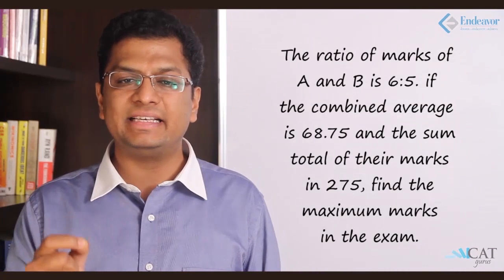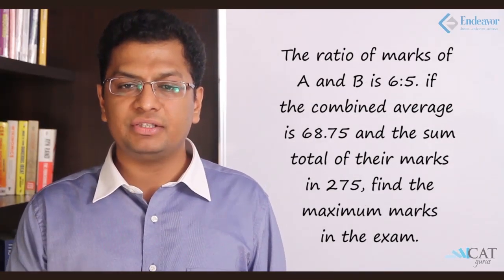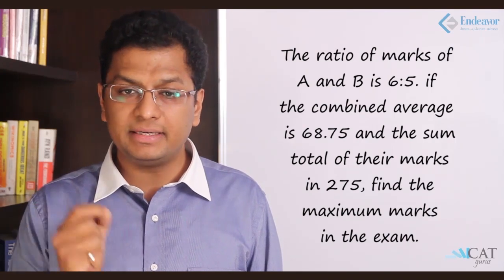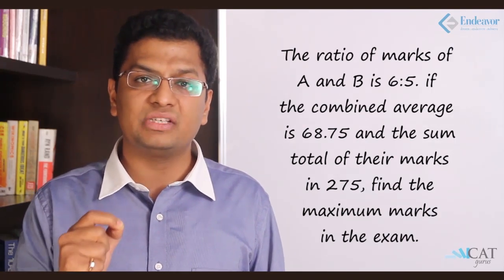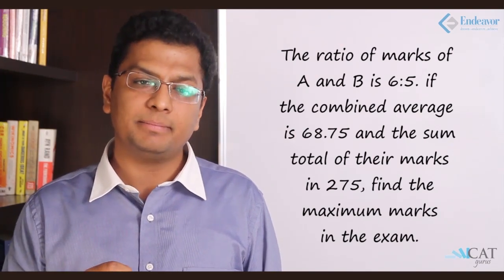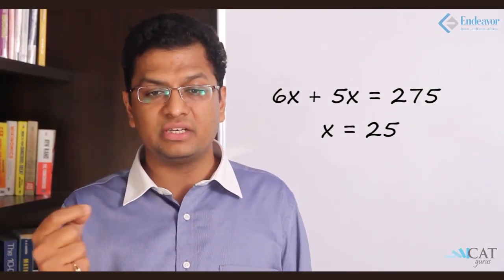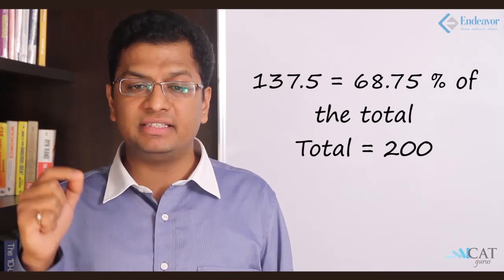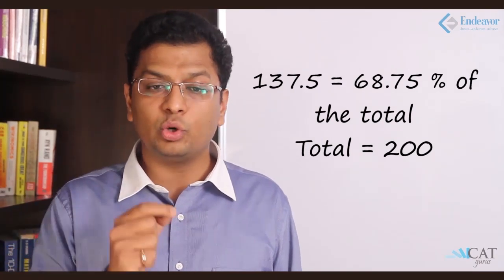Let's have a new example. The ratio of marks of A and B is 6 is to 5. If the combined average is 68.75 percent and the sum total of their marks is 275, find the maximum marks in the exam. A is to B is 6 is to 5, so A can be assumed as 6x and B as 5x. 6x plus 5x will give me the total marks which is 275, so x becomes 25. This 275 is also the combined average which is 68.75 percent. If I take one at a time, 137.5 is 68.75 percent of the total, so the total becomes 200.